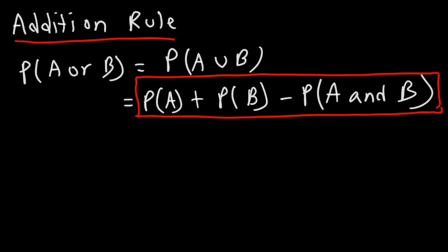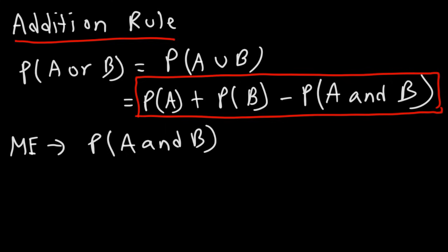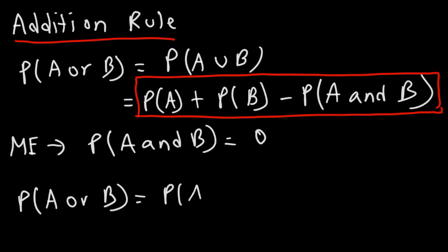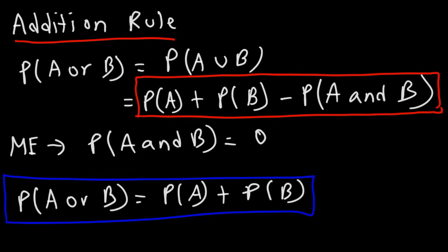Sometimes you may be dealing with two events that are mutually exclusive. For mutually exclusive events, the probability of getting event A and B together is zero. Therefore, the probability of getting A or B becomes P(A) plus P(B) if A and B are mutually exclusive events. But you can always use the full formula, which will work regardless of what type of events you're dealing with.